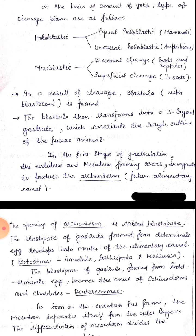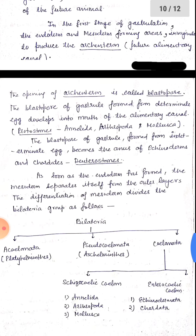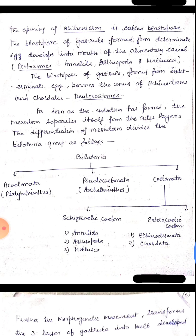The blastula then transforms into a three-layered gastrula, which constitutes the rough outline of the future animal. In the first stage of gastrulation, the endoderm and mesoderm forming areas invaginate to produce the archenteron. The archenteron is the future alimentary canal. The opening of the archenteron is called the blastopore. The blastopore of the gastrula formed from a determinate egg develops into the mouth of the alimentary canal, while the blastopore of the gastrula formed from an indeterminate egg becomes the anus of echinoderms and chordates, that is, deuterostomes.